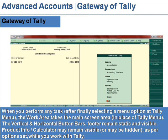When you perform any task, after finally selecting a menu option at the Tally menu, the work area takes the main screen area in place of the Tally menu. The vertical and horizontal button bar's footer remains static and visible. The product info calculator may remain visible or may be hidden while you work with Tally.